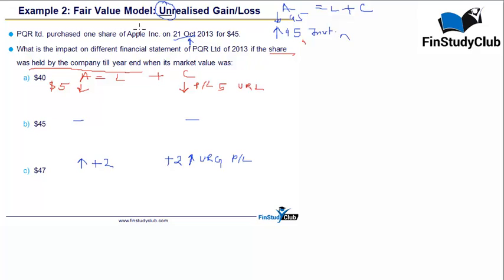So short point is that in case of fair value model, the unrealized gain always, always go to your P&L, which is known as income statement.